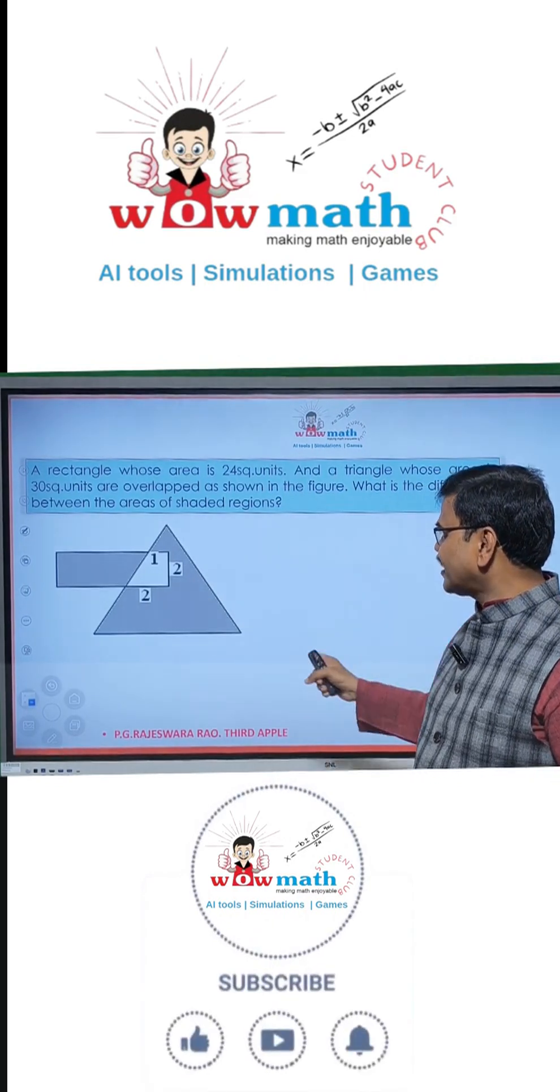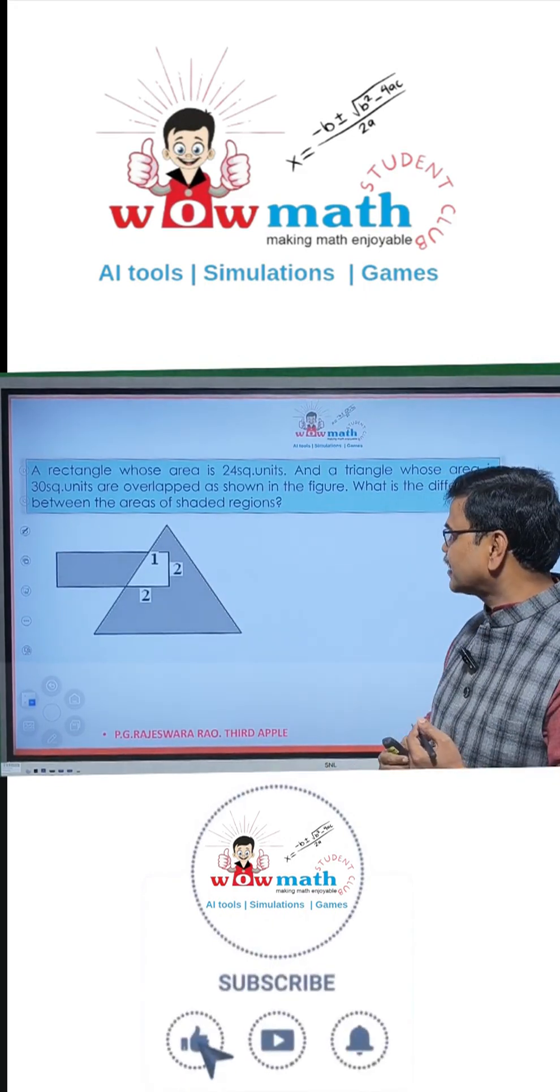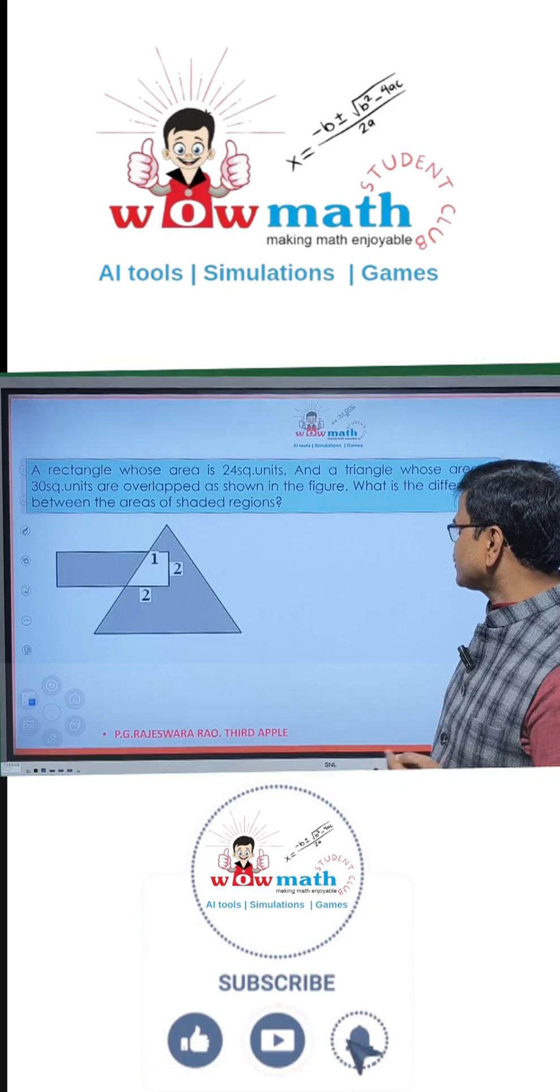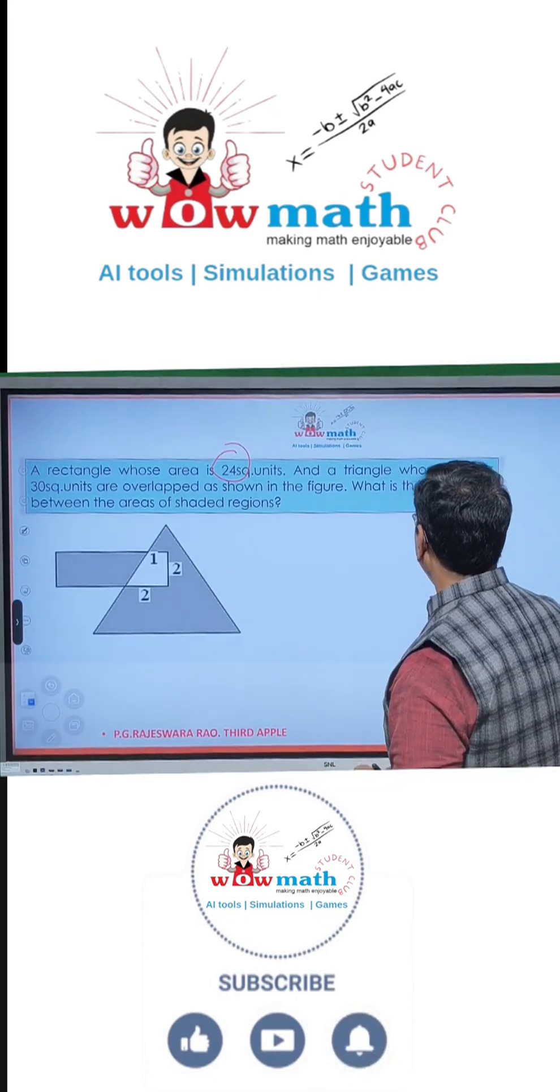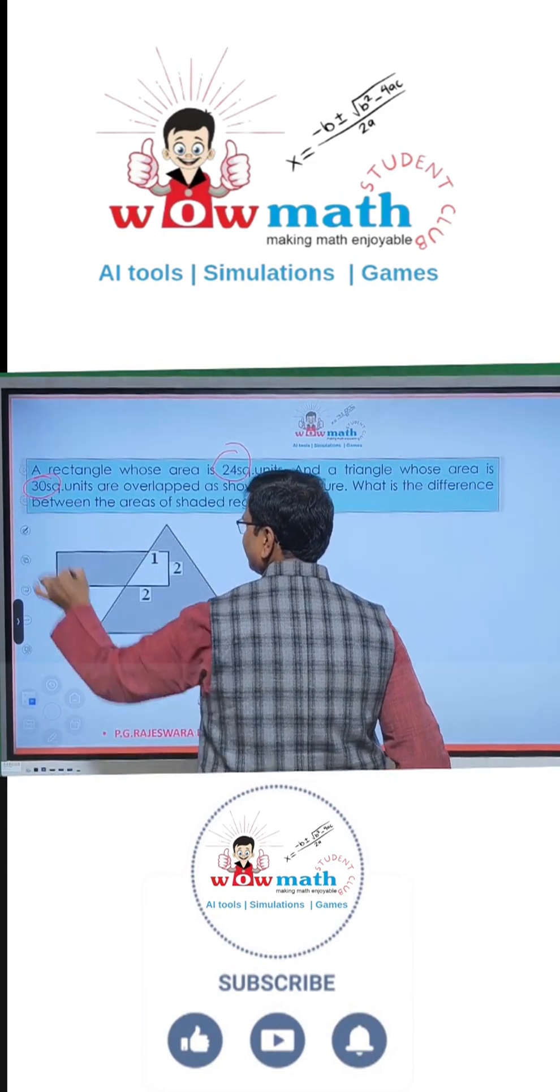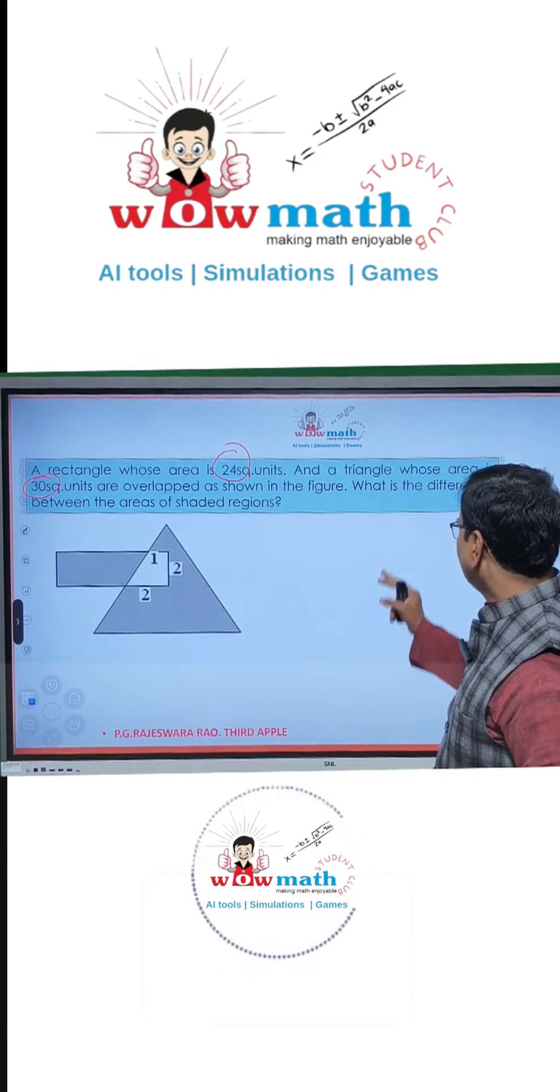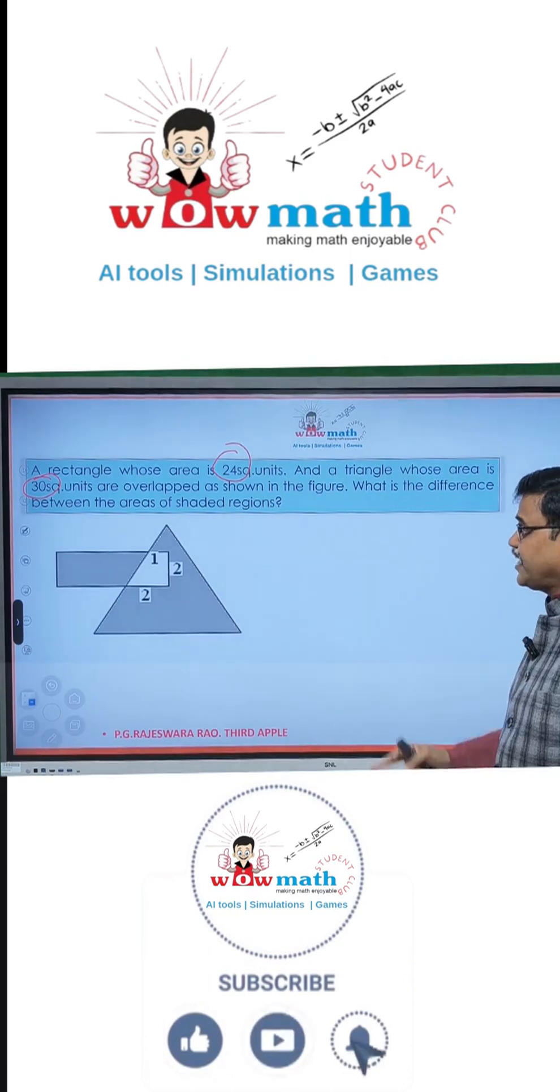There is a rectangle and there is an equilateral triangle which are overlapped with each other. Rectangle area is 24 square units and the triangle area is 30 square units. Then what is the difference between the shaded regions?